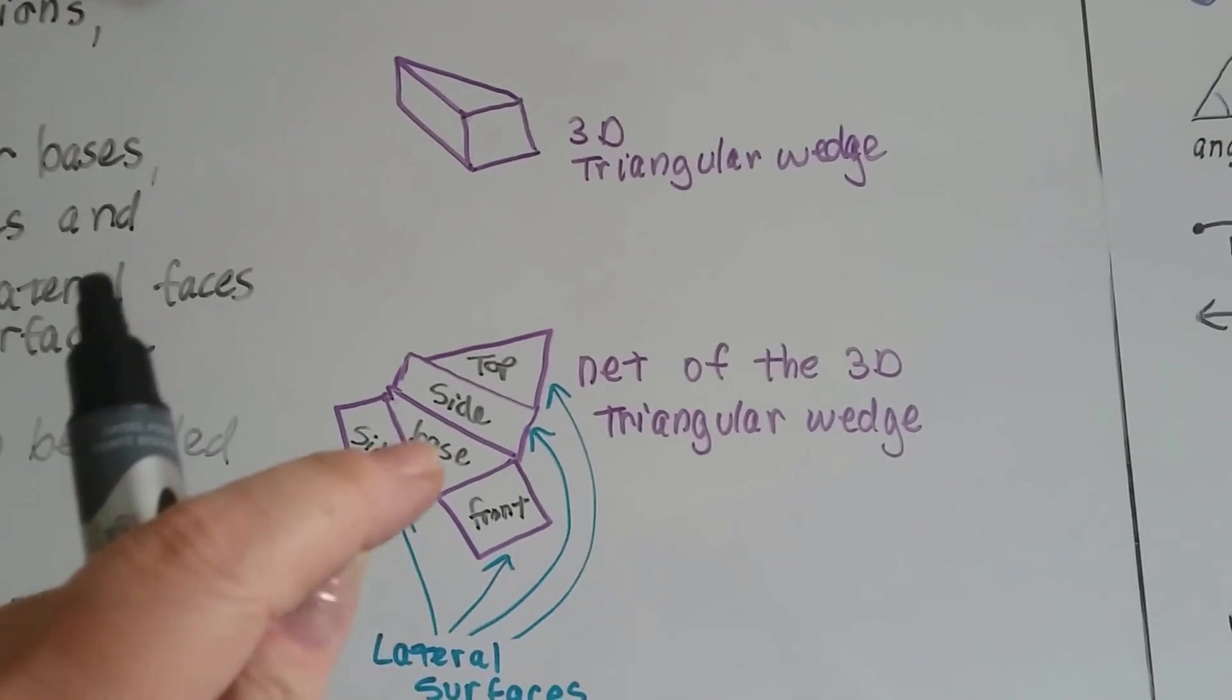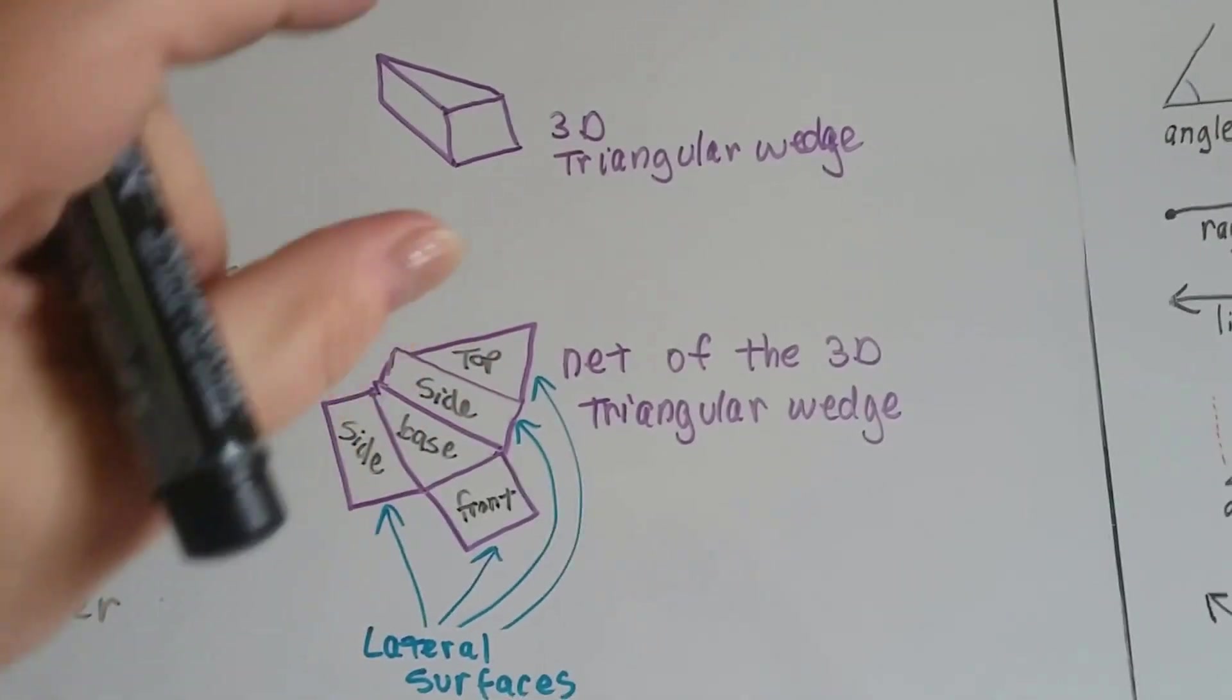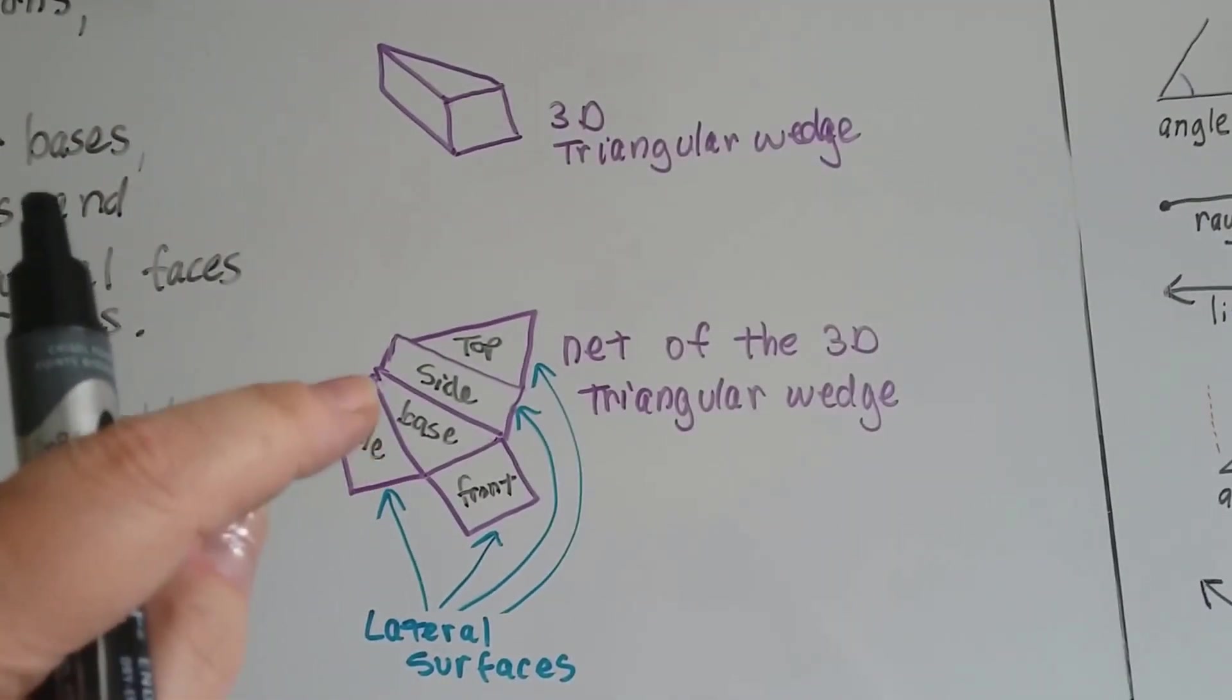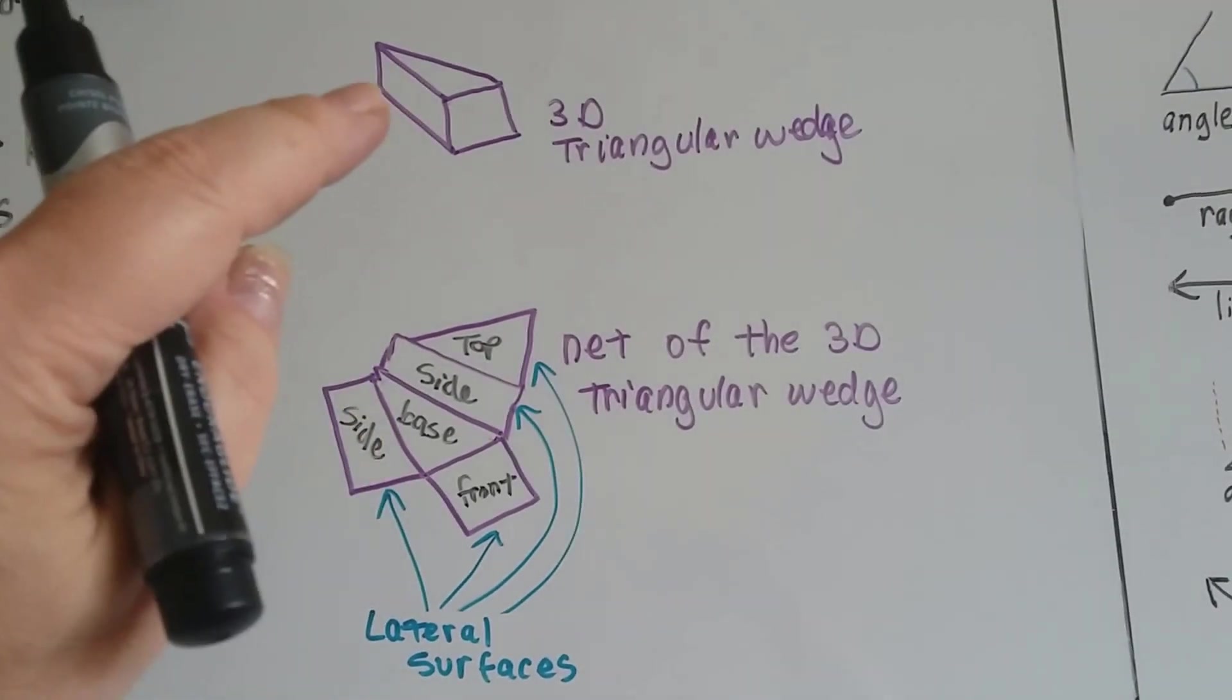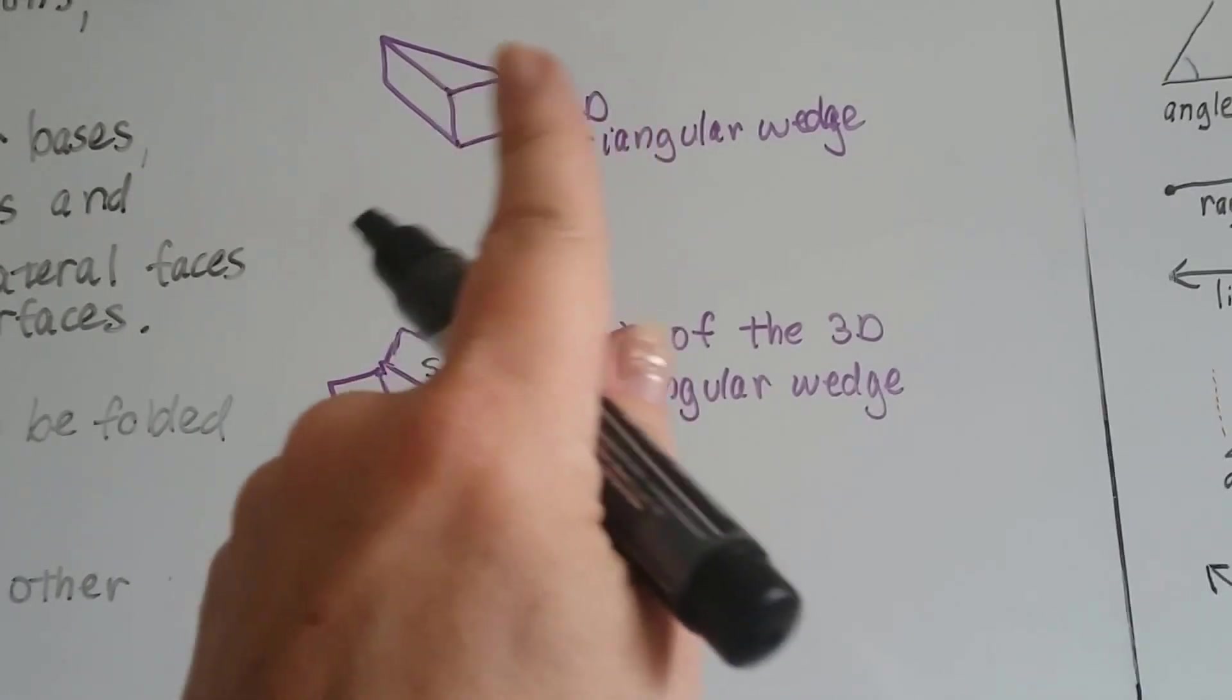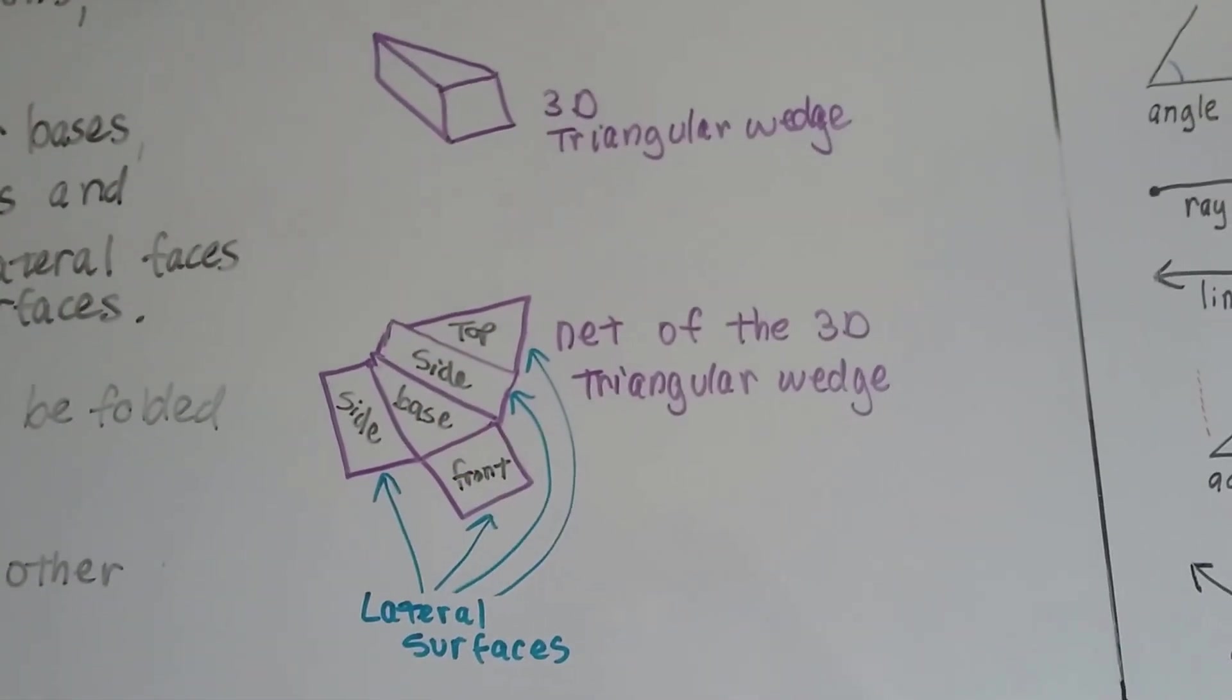It's got a base that it's sitting on, and the top is a base. It's considered base 1 and base 2. Here's the rectangle side that is folded along this line here. That's that line right there. And then there's the hidden rectangle on the other side around the back, and there's that front square.